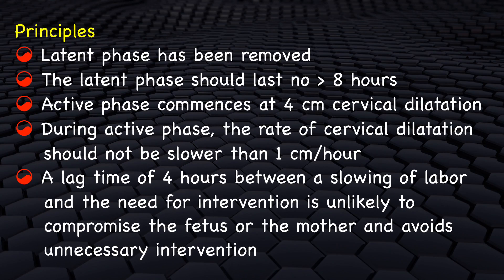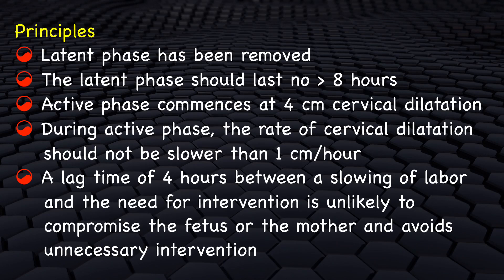The WHO partograph has the following modified features. The latent phase has been removed; the latent phase should last no longer than 8 hours. The active phase commences at 4 cm cervical dilatation. During the active phase, the rate of cervical dilatation should not be slower than 1 cm per hour. A lag time of 4 hours between a slowing of labour and the need for intervention avoids unnecessary interventions such as caesarean section.